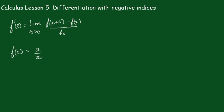In lesson 5, we're going to differentiate a function with negative indices. Recall the formula for differentiation from first principles is the limit as h goes to 0 of [f(x+h) - f(x)]/h.